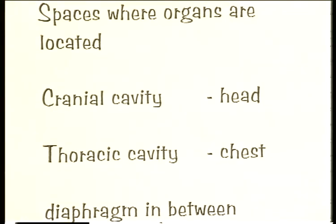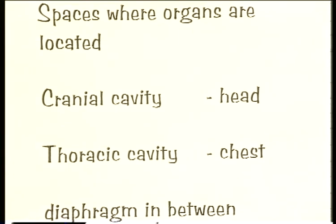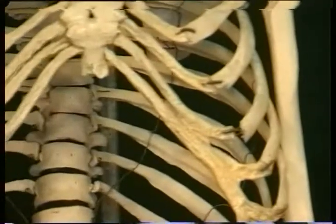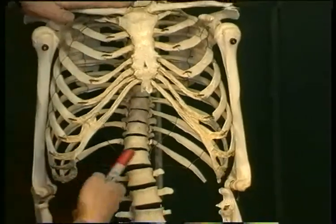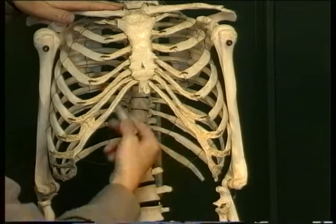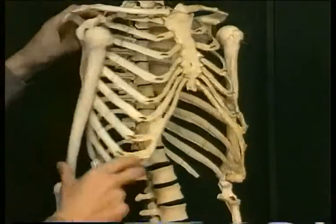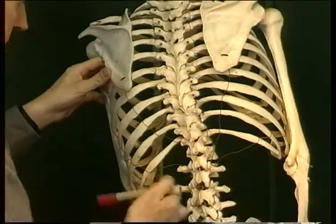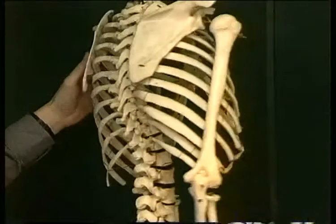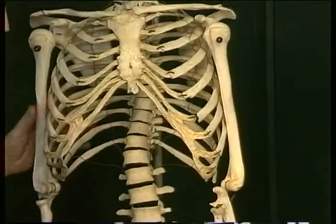Moving further down the body, the next cavity down is the thoracic cavity. The thoracic cavity is the space inside the chest — thorax means chest. This is all the space that is inside the ribs to the front, so all this space inside here is the thoracic cavity. And if we look at it from the back as well, we can see that the ribs are enclosing a space in the vertebral column. Everything inside this area is the thorax, the thoracic cavity or the chest cavity.